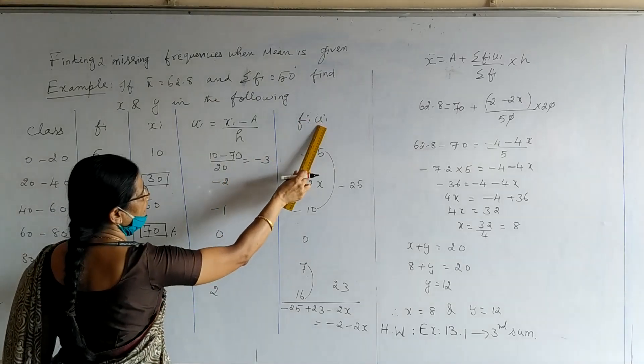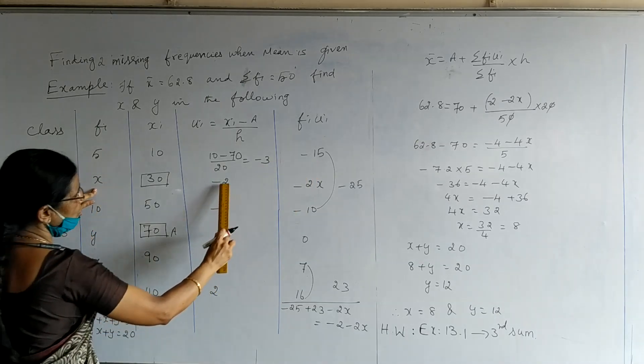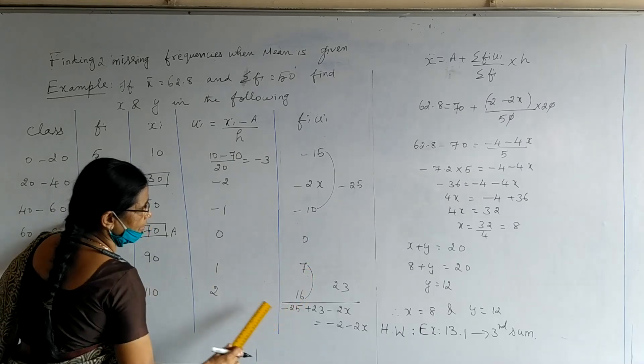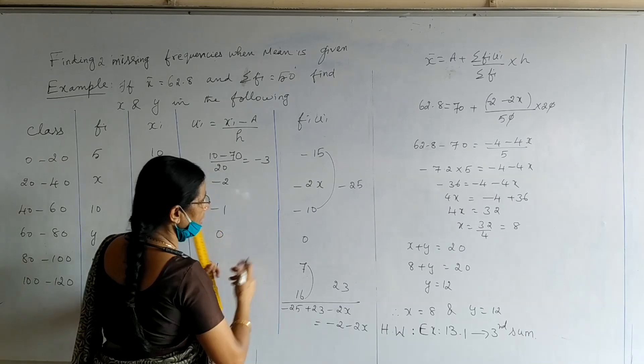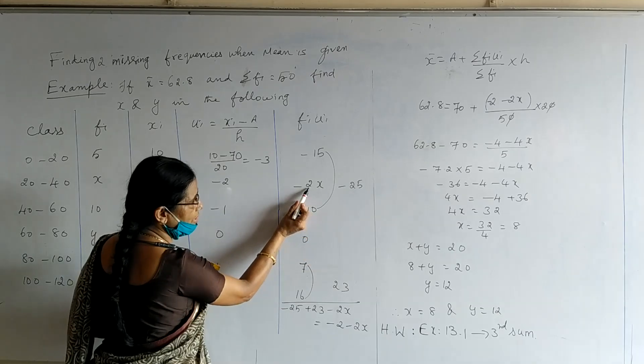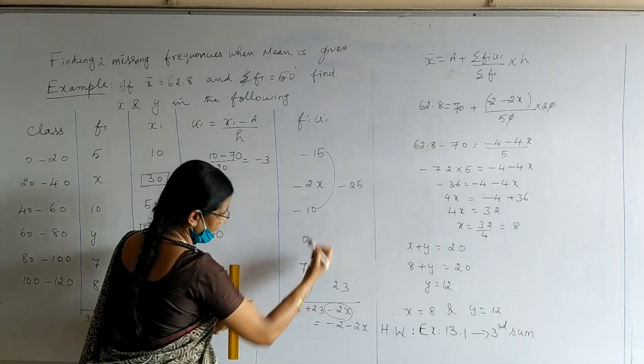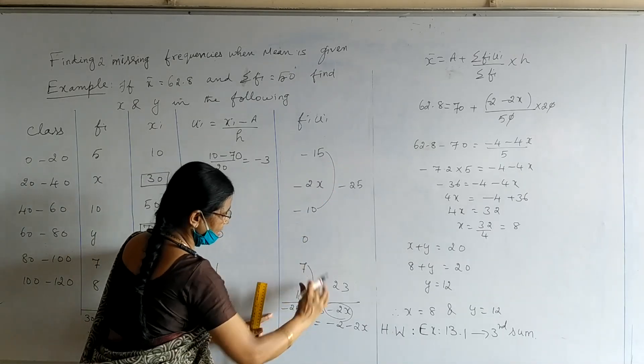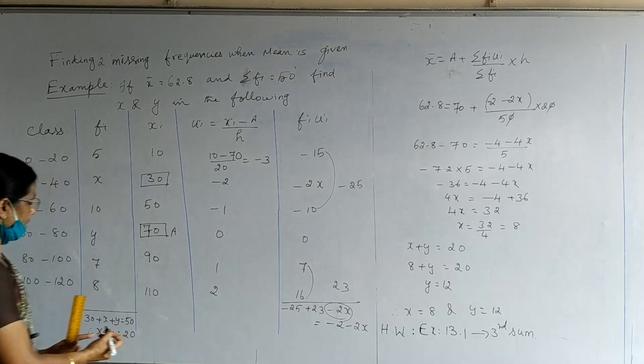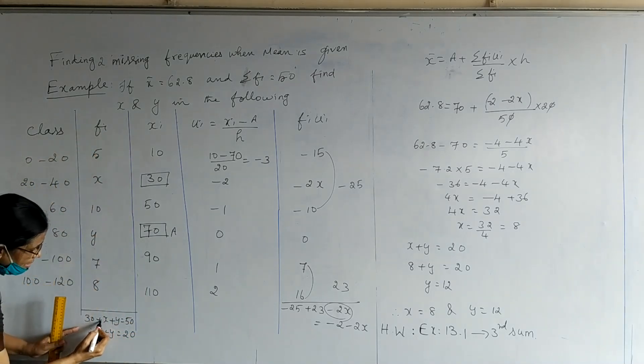The last column is fi ui, which is the product of fi and ui. 5 into minus 3 becomes minus 15. x into minus 2 becomes minus 2x. Similarly, we get minus 10, 0, 7, and 16. Here, we have many categories. Minus numbers are there, 0 is there, plus numbers are there, and there is a term with x. So, x is a separate term. I have written here minus 2x. Total of minus numbers becomes minus 25, and the total of plus numbers is plus 23. Solving this, we are getting minus 2 minus 2x. Also, I have formed total of this frequency column, which gives 30 plus x plus y.